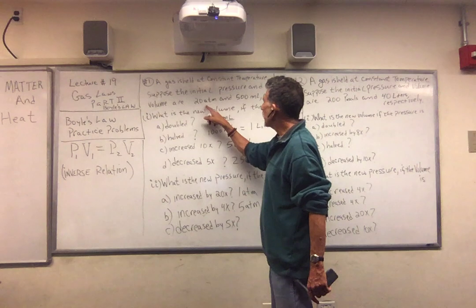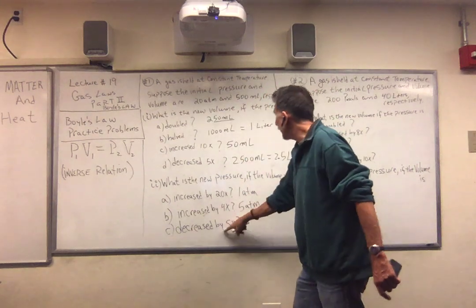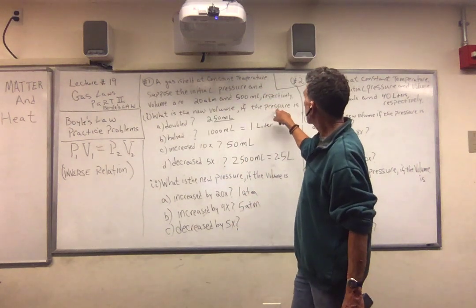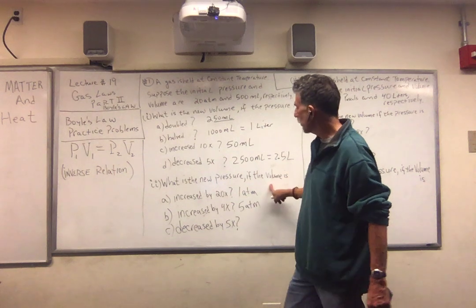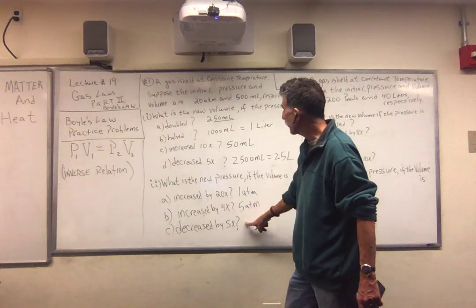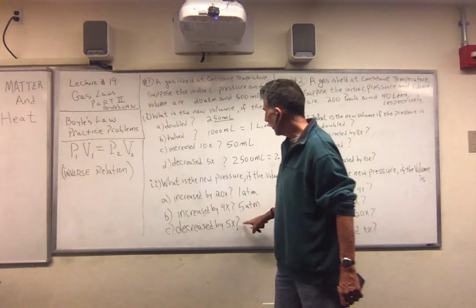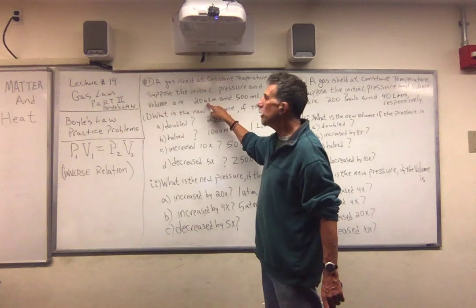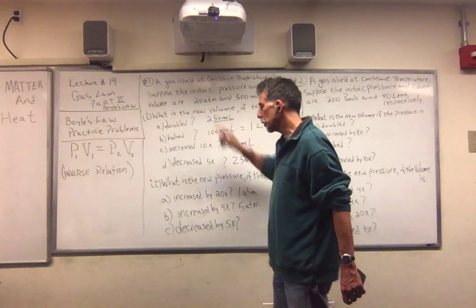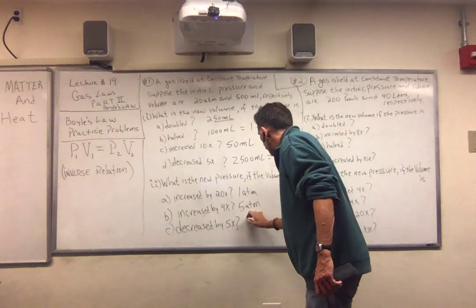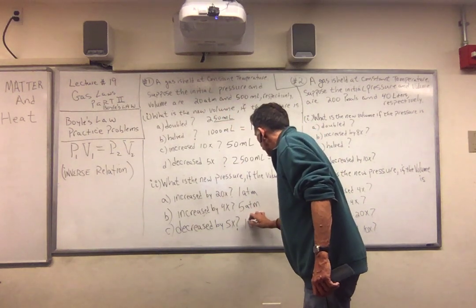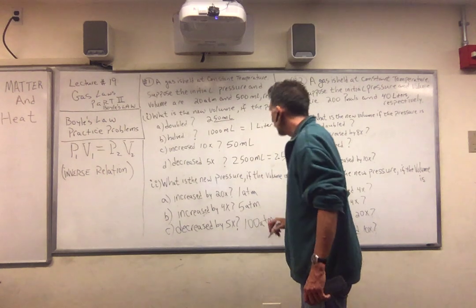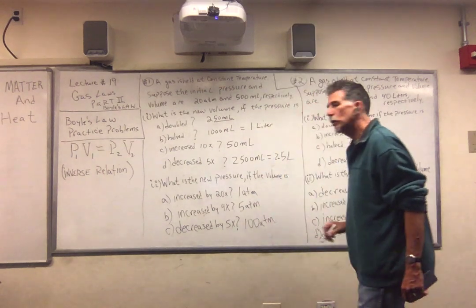What happens if we decrease the volume by 5 times? If we decrease the volume by 5 times, the pressure must increase by 5 times. So the answer multiplied by 5 — we get 100 atmospheres.